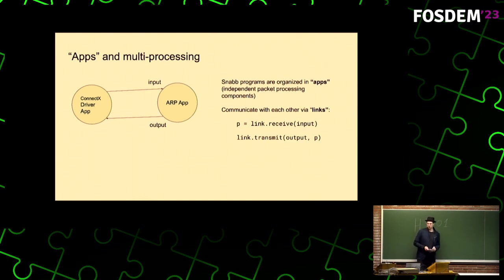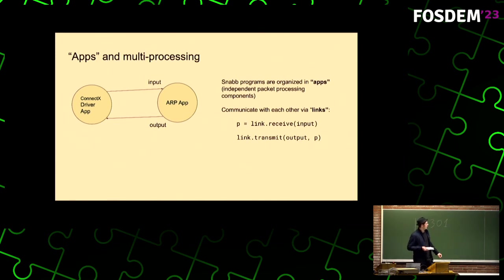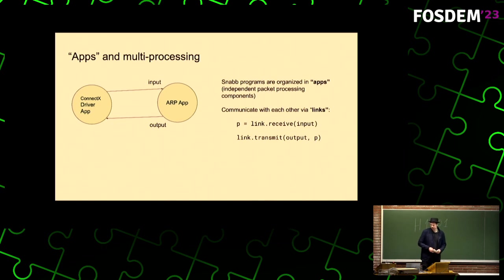You communicate using those links as shown here. That's basically the API: you call link.receive on a link to receive a packet, and you call link.transmit on an output link to send a packet.